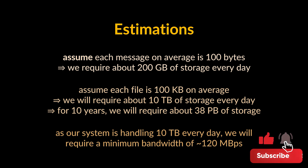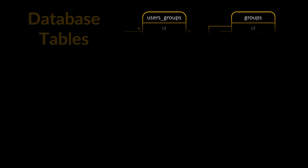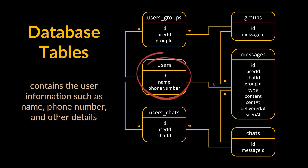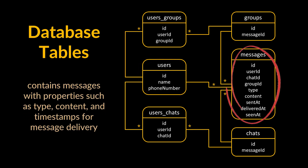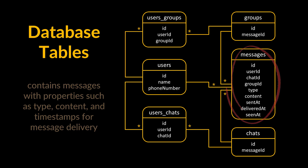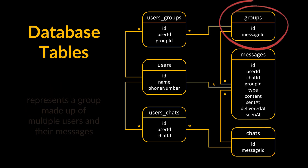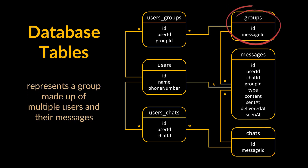As previously mentioned, make sure to check any scale or traffic-related assumptions with the interviewer. Now let's lay out the possible tables for this design. The users table contains user information such as name and phone number. The messages table has properties such as type (text, image, video), content, timestamps, and a corresponding chat ID or group ID. The chats table represents a private chat between two users containing multiple messages, and the groups table represents a group made up of multiple users and their messages.